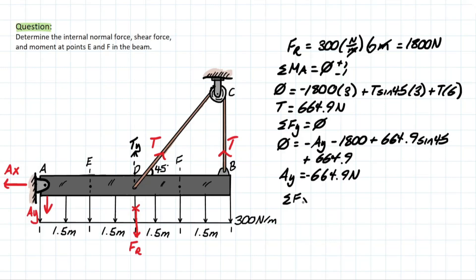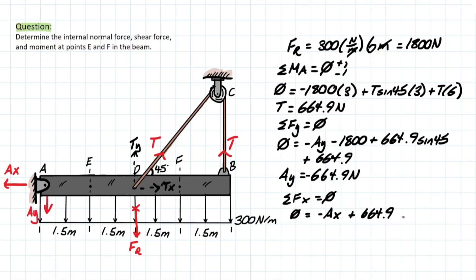Lastly, we take the forces at X so that we can find the AX component, and there's only going to be one other opposing reaction to it which is TX. So we have negative AX plus T, which was what we solved for earlier — 664.9 — and we are taking that TX component, so we're taking cosine of 45. Solving for AX, we are left with 470.2 newtons.